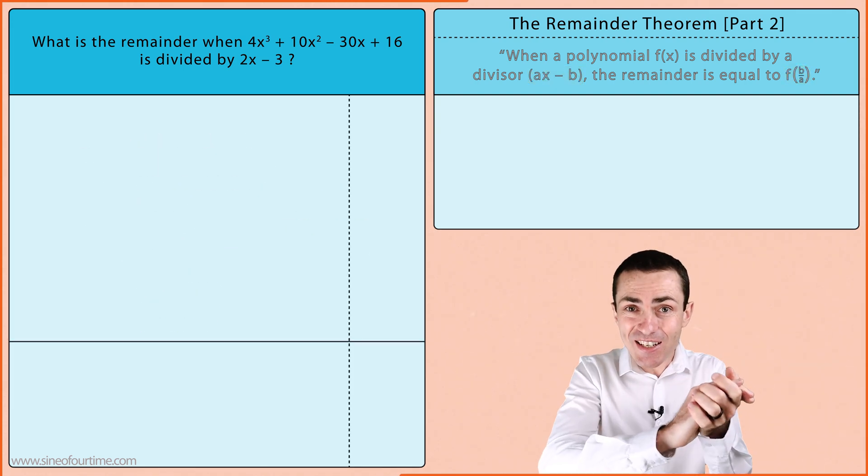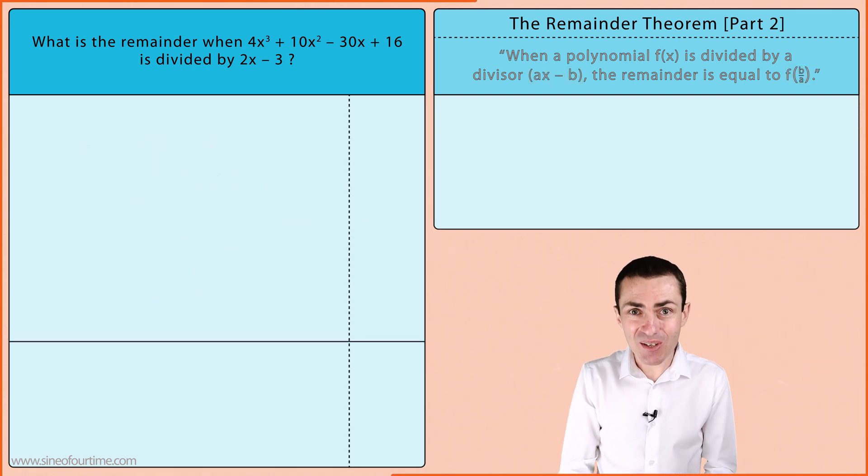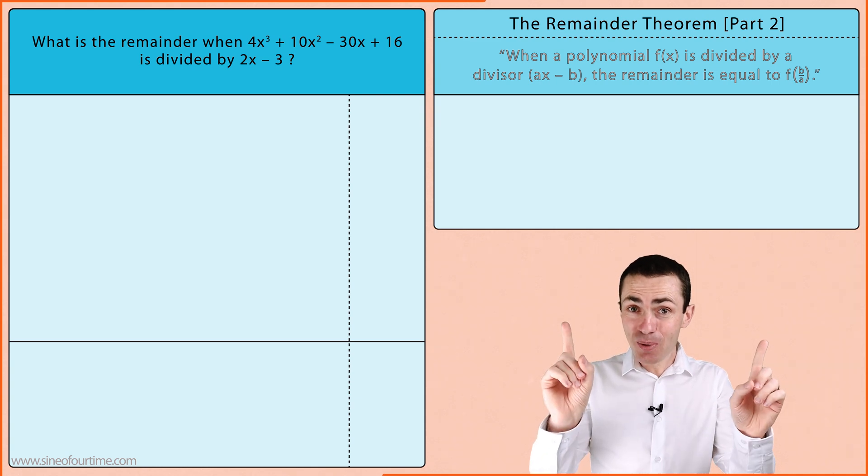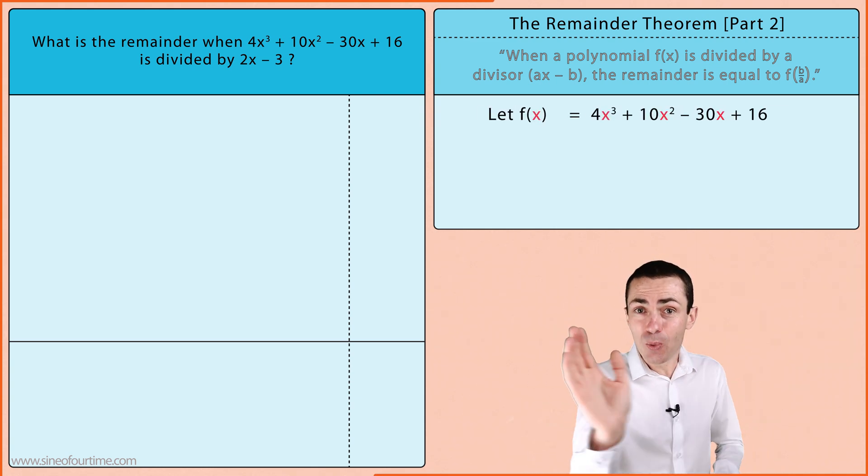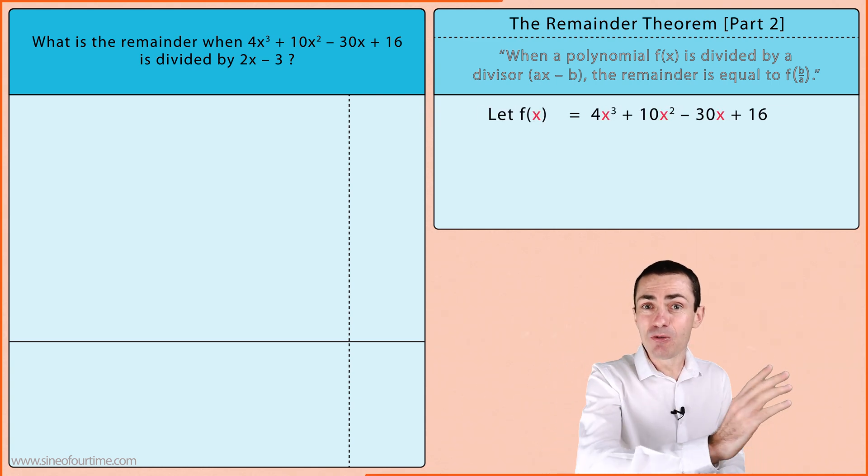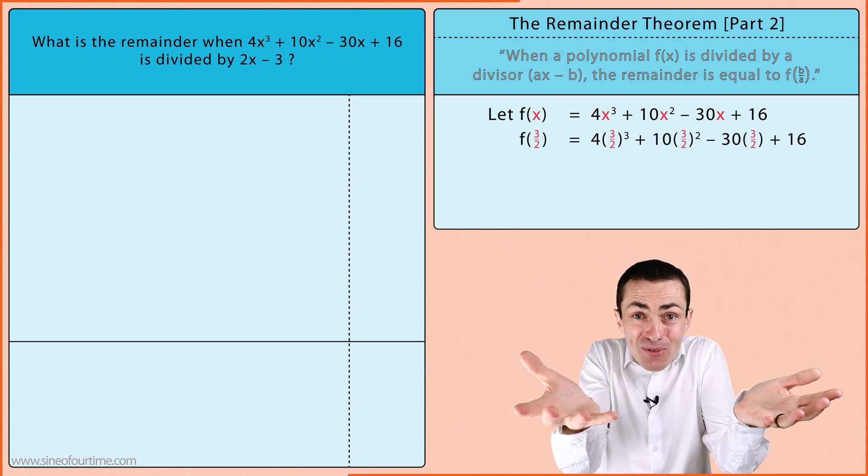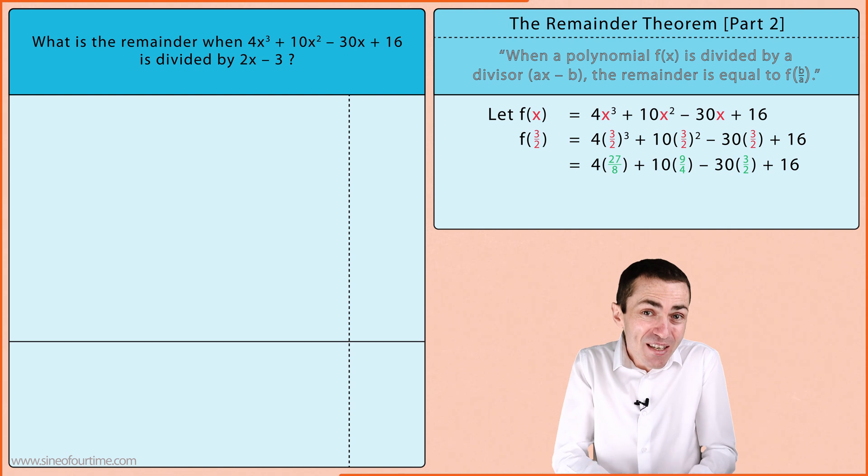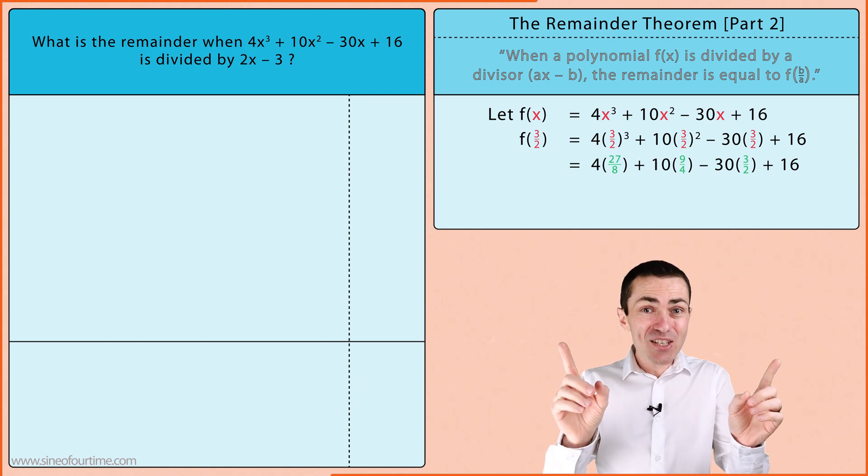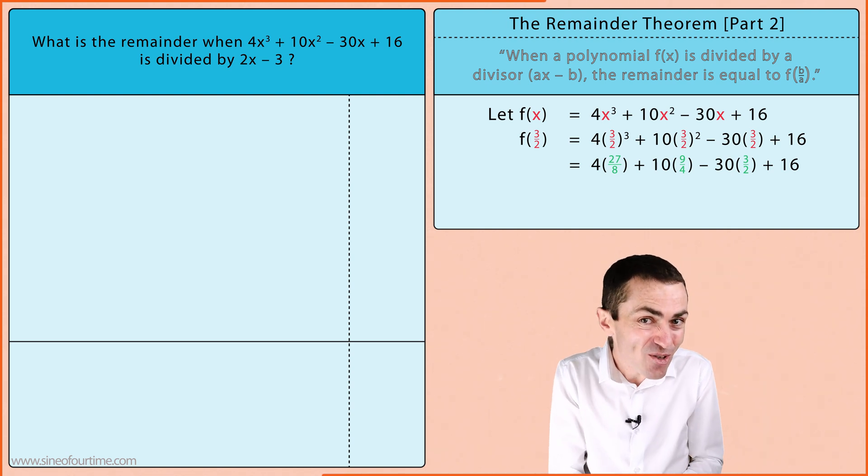Here is what we actually need to do in our calculations. We take that original polynomial function and wherever we see x's we replace them with 3 over 2's, and then simplify. And just be careful because simplifying these fractions can get a little tricky.